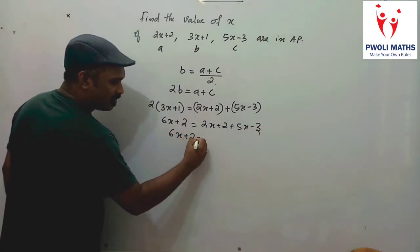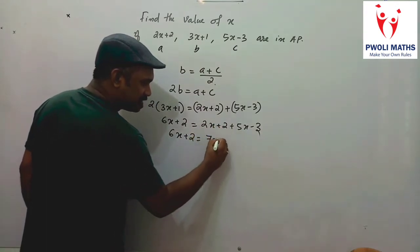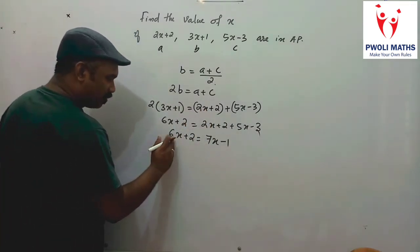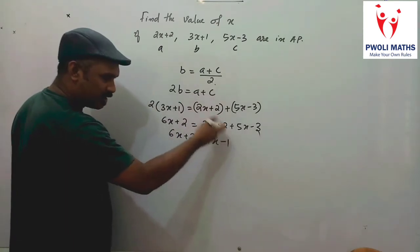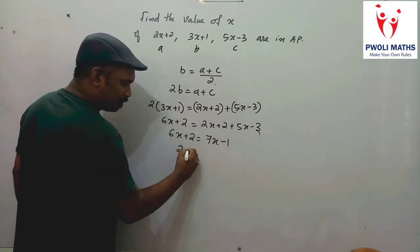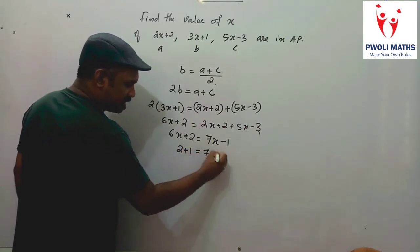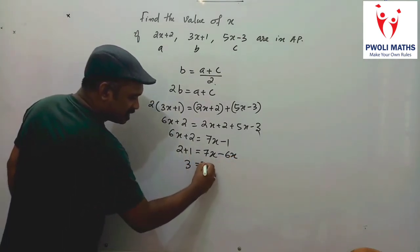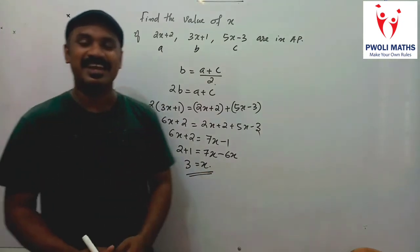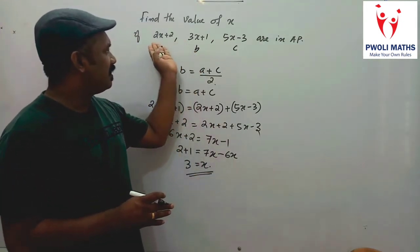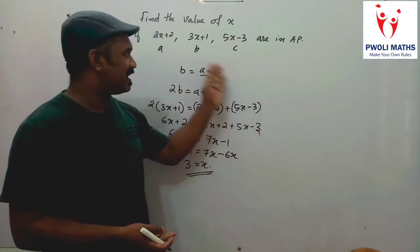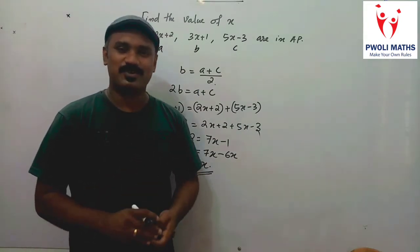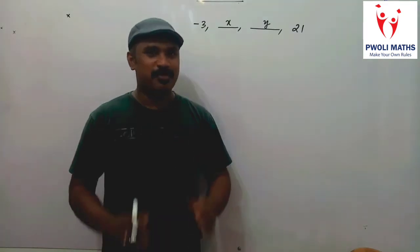Applying the formula 2B equals A plus C: 2 times (3x plus 1) equals (2x plus 2) plus (5x minus 3). That gives 6x plus 2 equals 7x minus 1. Shifting x terms: 2 plus 1 equals 7x minus 6x, so 3 equals x. Therefore x equals 3, and the consecutive terms of the AP have x value equal to 3.